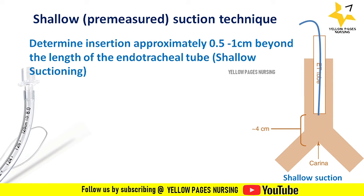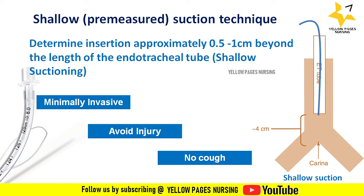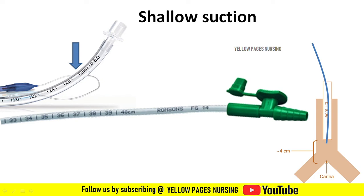Shallow suctioning is minimally invasive — it avoids injury to the airway and no carina is stimulated. It will only clear secretions from within the lumen of the endotracheal tube. For example, if the ET tube is fixed at 28 centimeters, the suction catheter should be inserted to 29 centimeters — that is, 28 plus 1.